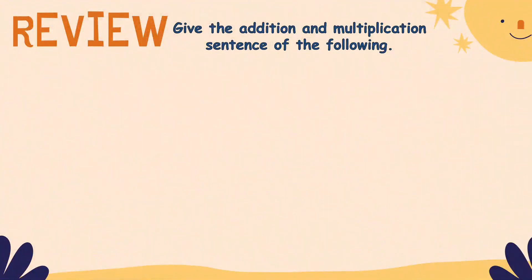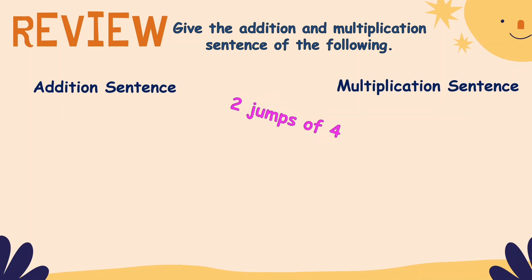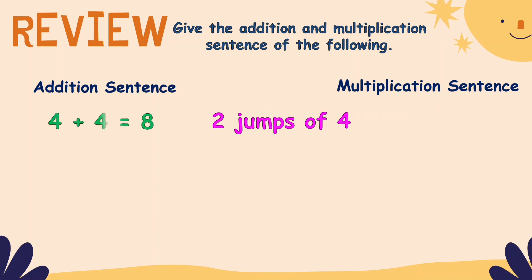Let us recall our lesson about multiplication as repeated addition. Give the addition and multiplication sentence of the following. First question: two jumps of four. That is four plus four equals eight, and our multiplication sentence is two times four equals eight.